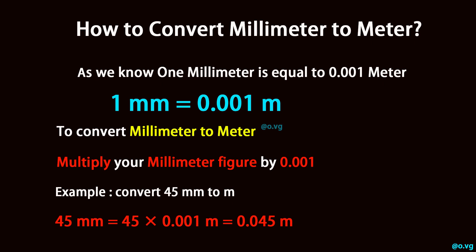Example: convert 45 millimeters to m. 45 millimeters is equal to 45 times 0.001 m, equals 0.045 m.